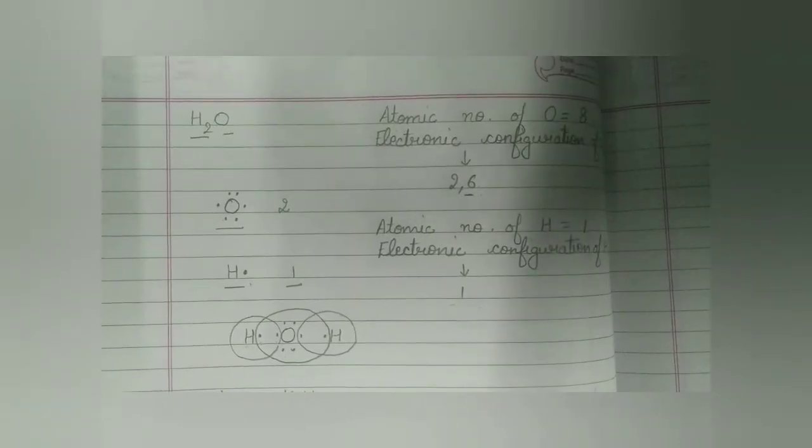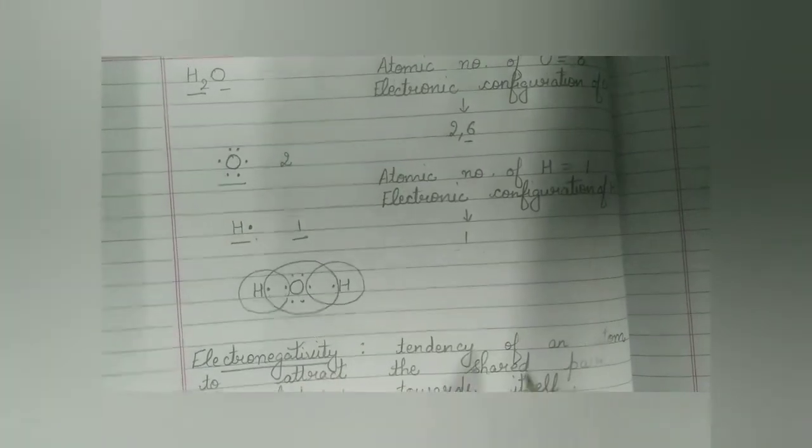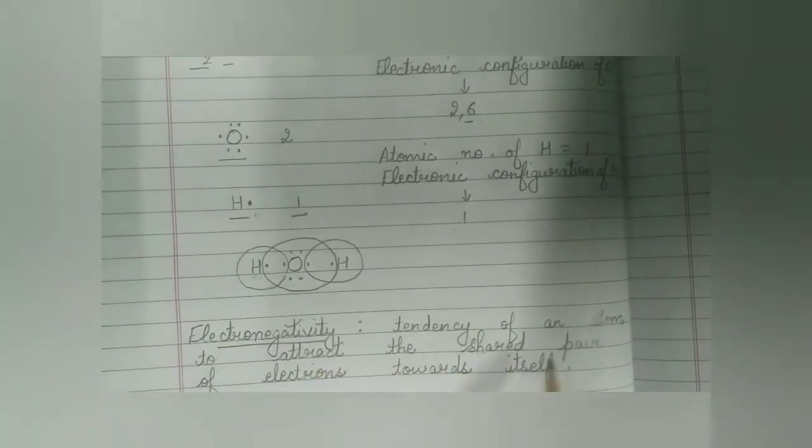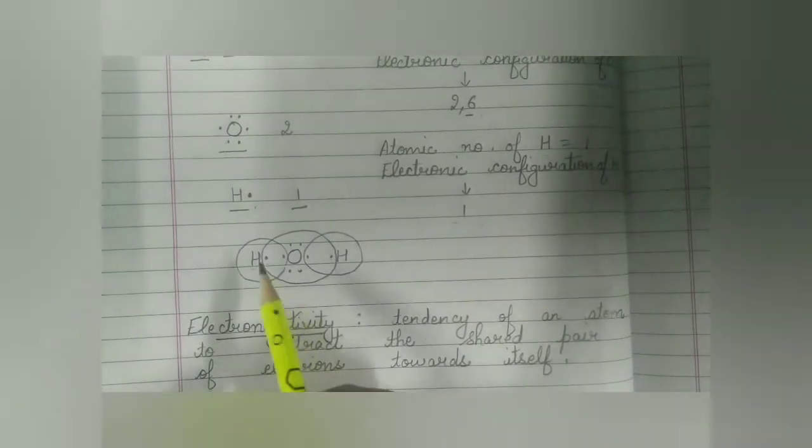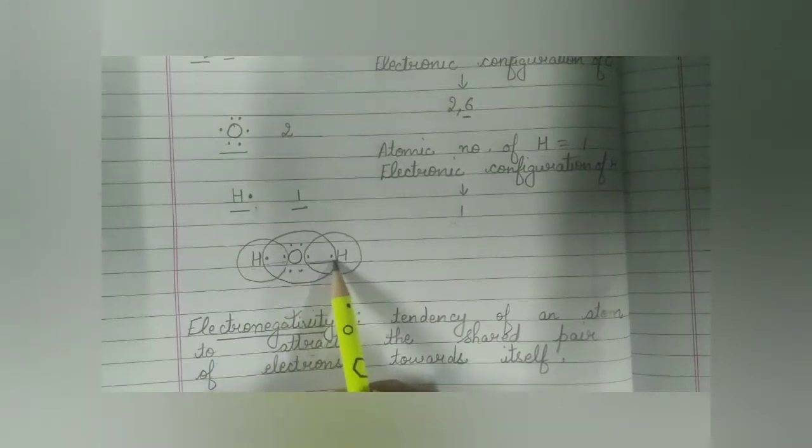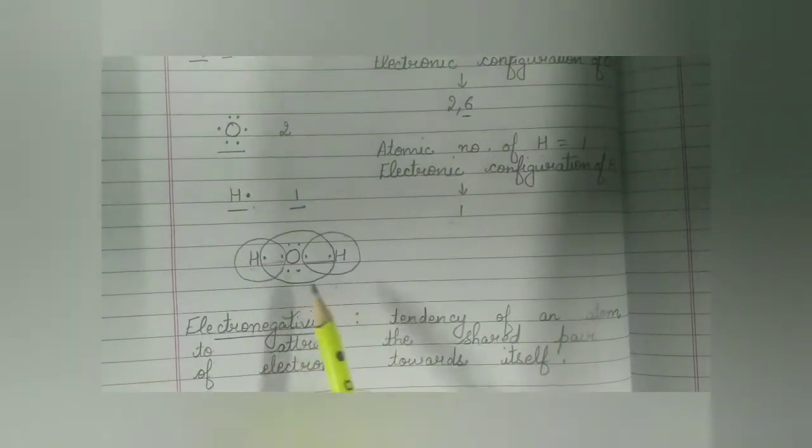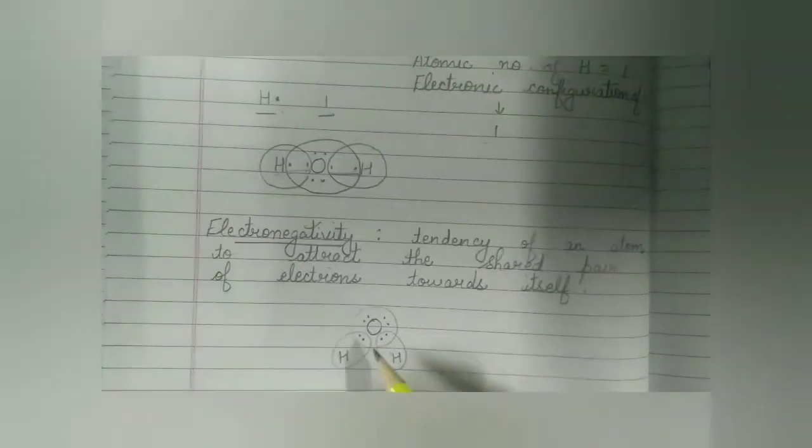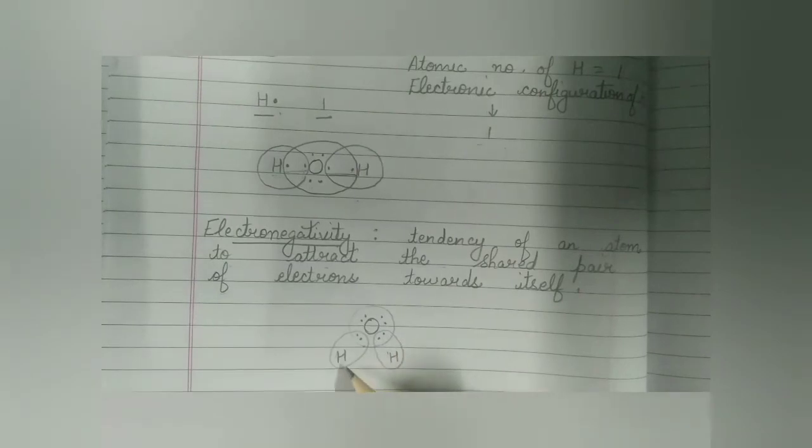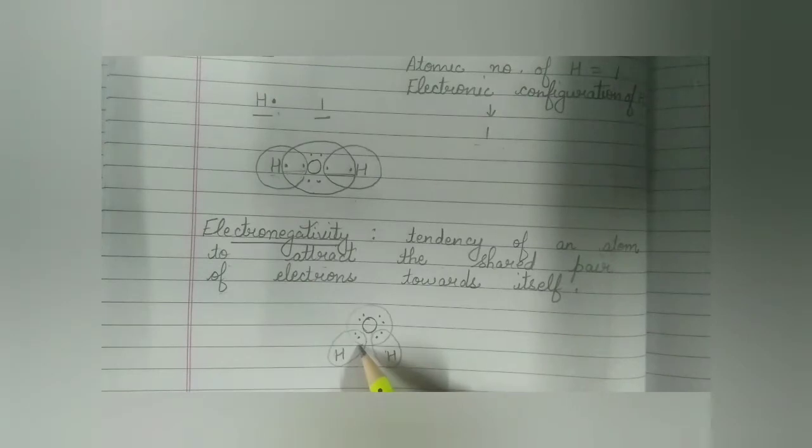Here, you must know the meaning of one more term, that is electronegativity. Electronegativity means the tendency of an atom to attract the shared pair of electrons towards itself. Shared pair of electrons means the pair of electrons which are shared between 2 atoms for the formation of a chemical bond or a covalent bond. Now here, in the molecule of water, as oxygen is more electronegative than hydrogen, therefore, the shared pair of electrons between the oxygen and hydrogen atoms are shifted more towards oxygen atom.